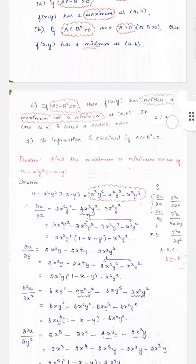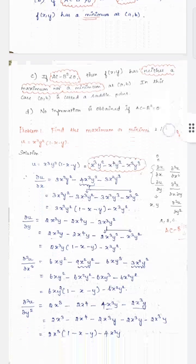Coming to the problem: find the maxima and minima of u = x³y²(1 - x - y). The procedure is: first find the first partial derivatives ∂u/∂x and ∂u/∂y. Next, find the second-order partial derivatives ∂²u/∂x², ∂²u/∂x∂y, and ∂²u/∂y².